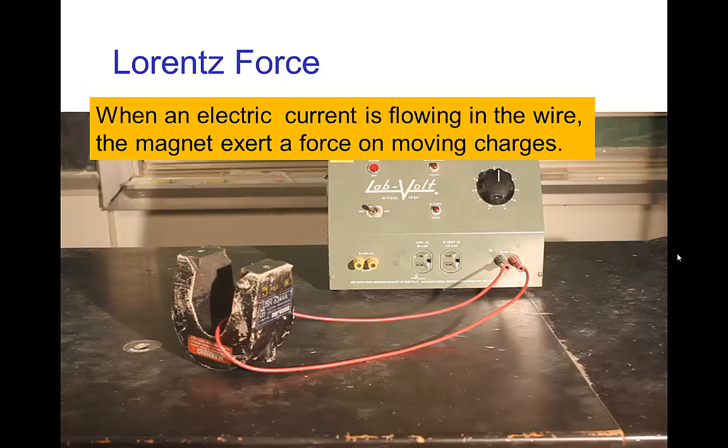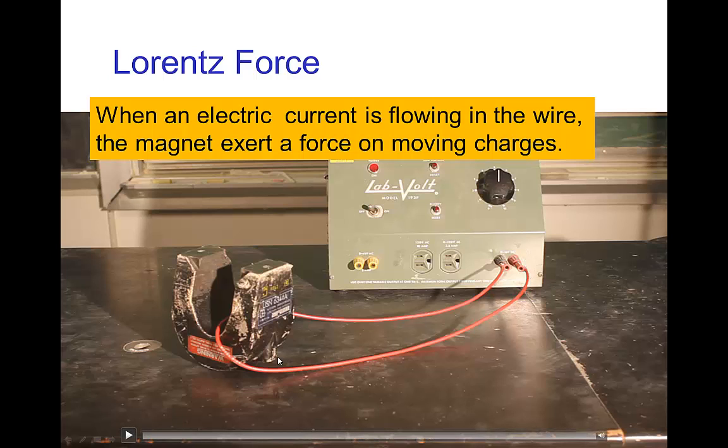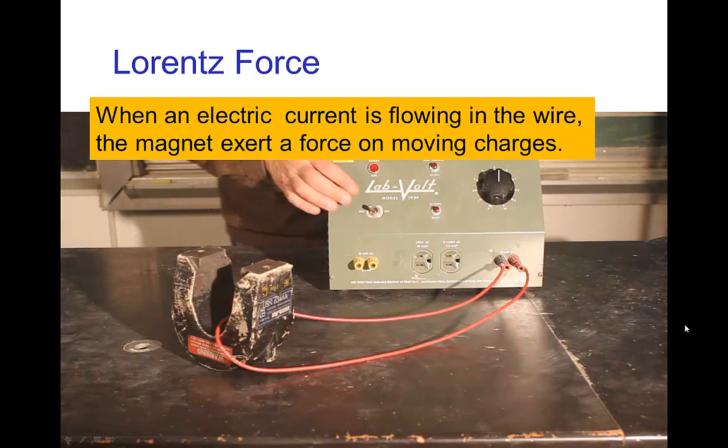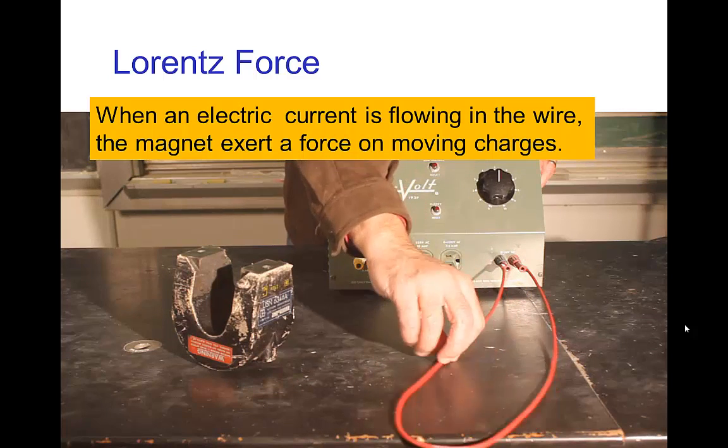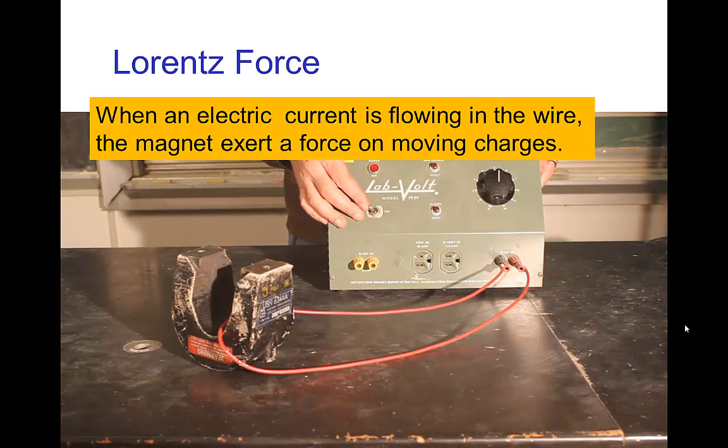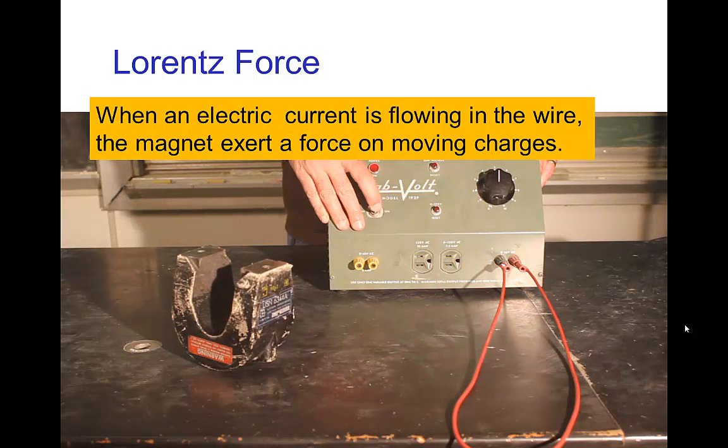Now, the moving charges don't have to be moving in vacuum or in space. The electric charges that are moving in a current that's passing through a wire also feel that force. So we'll see this. I'm going to turn on and see when I turned on the current, the wire jumps out. See that again? So that Lorentz force acted on the electrons moving in the wire and the magnetic field produced that Lorentz force on those moving charges and actually pushed the wire away.